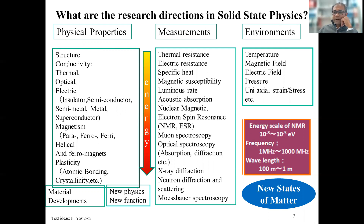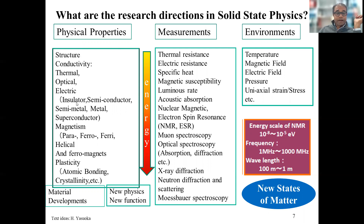For physical properties, you basically start by measuring the structure. You try to understand the conductivity of the system: thermal conductivity, optical conductivity, and electrical conductivity. The electrical conductivity immediately gives you information about whether the system is an insulator, semiconductor, semi-metal, or metal.